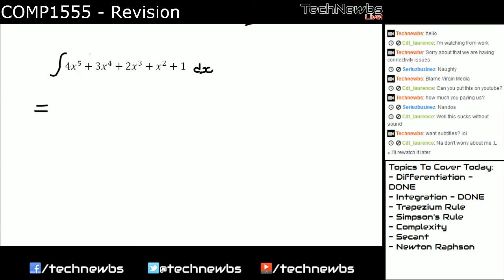So the answer to this will be, you first add one to the power. So it will be 4x to the power of 6, and then you divide that value by the power. So divide by 6. And you just keep on doing the same. 3x to the power of 5 divide by 5, plus 2x to the power of 4 divide by 4, plus x cubed divide by 3. And then plus x, because it's a 1, so you just keep it as x. And then plus C, because we don't have limits. And that's essentially it.